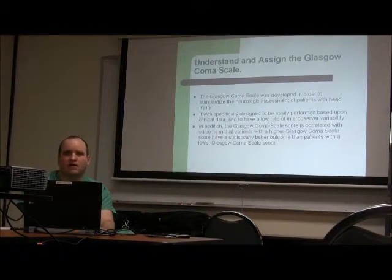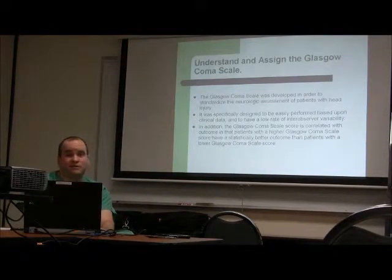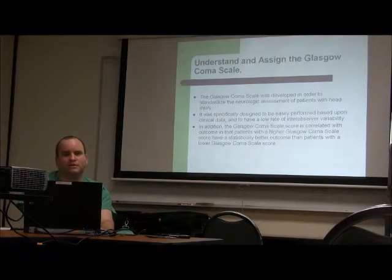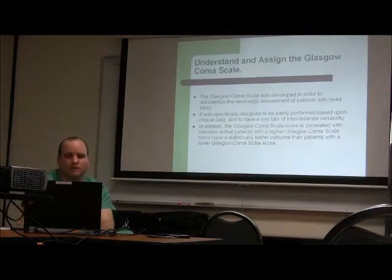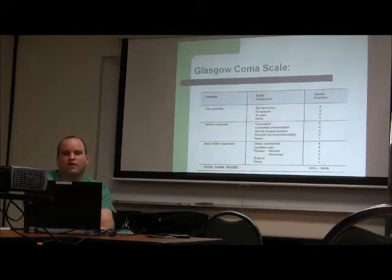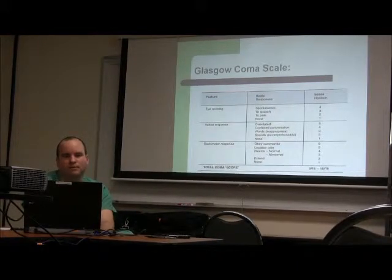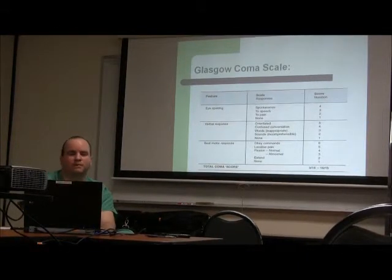You have to remember, not everybody with a low GCS score means that they're brain dead. We have to go back and look at the assessments we have to do. Was the patient on drugs or alcohol? Was the patient intubated? Or did we do something to the patient? That's why the patient has a GCS of three. The Glasgow Coma Scale has three parts: eye opening, verbal response, and motor response.